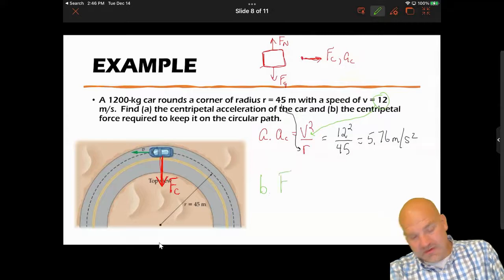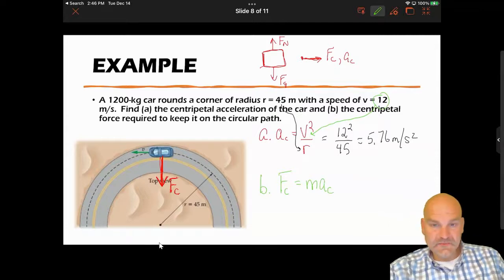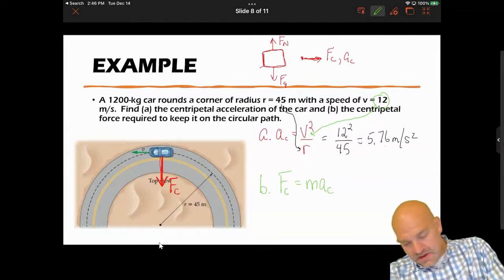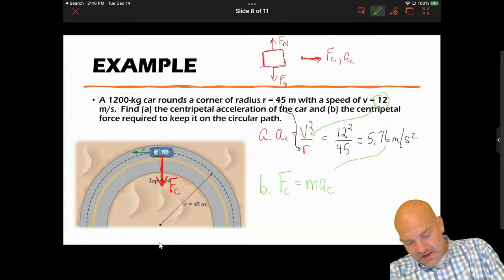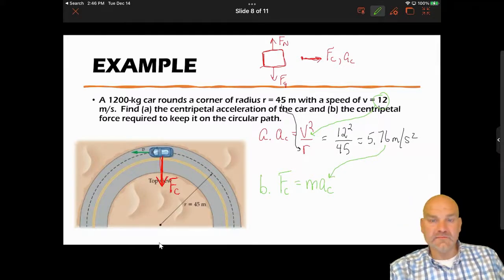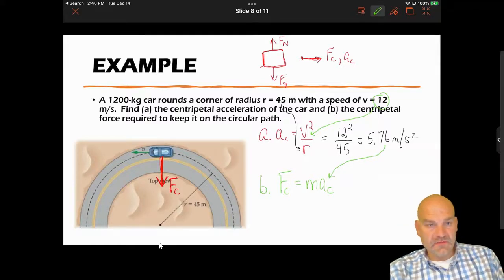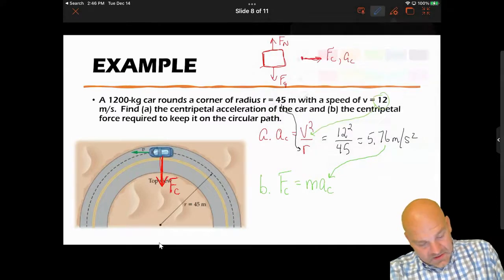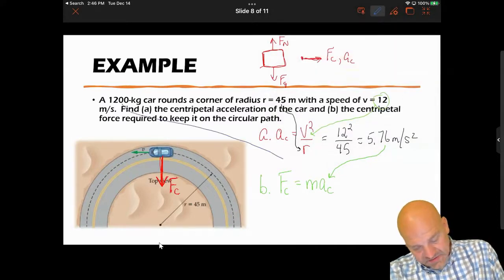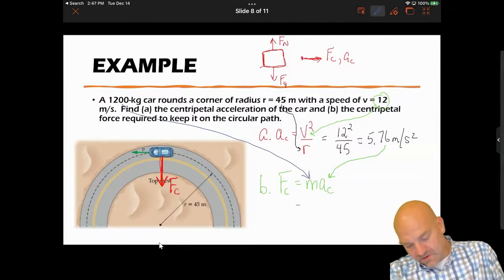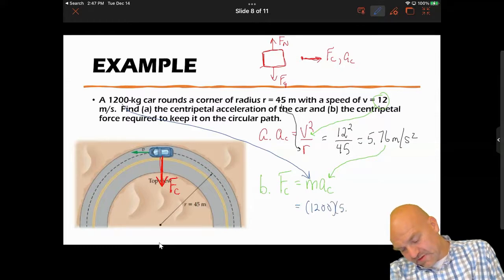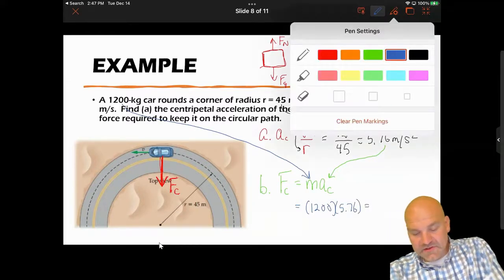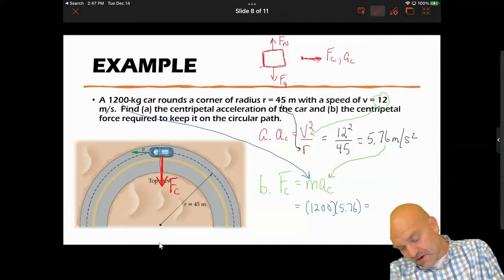Now for part B, I'm going to find my centripetal force, so I'm going to do F sub c equals m a_c. My answer to part A is my acceleration, my a_c, and then my mass is my 1200 kilograms. So all I'm going to do is 1200 times 5.76, and that's going to give me the force, which is going to be approximately 6900 Newtons.